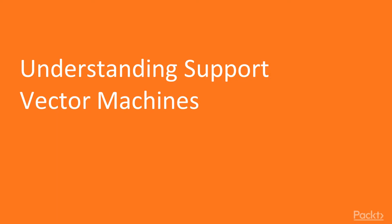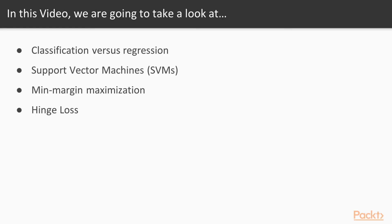So welcome to Video 1 of Section 2, Understanding Support Vector Machines. In this video, we're going to take a look at classification and how it differs from regression, which we covered in the last section. We're going to cover support vector machines, also known as SVMs, and we're going to learn about important concepts like min-margin maximization and hinge loss.